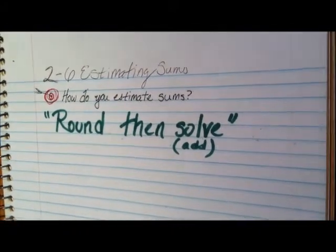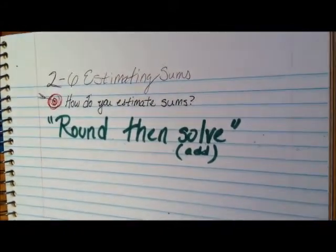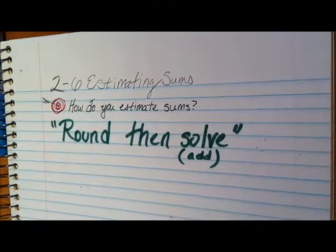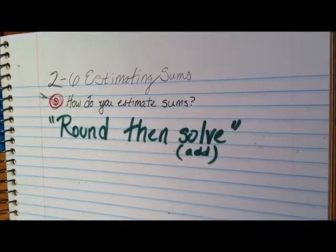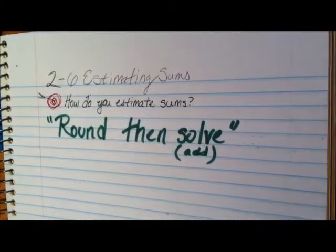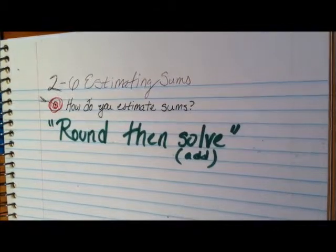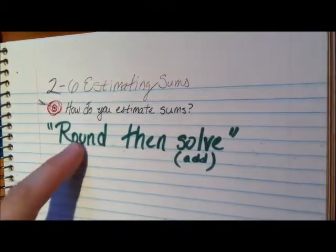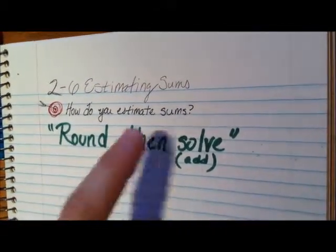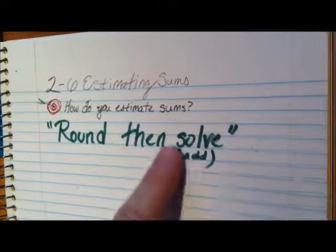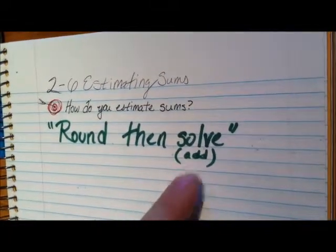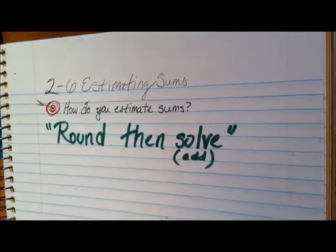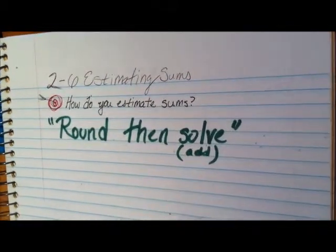In our last video we looked at rounding numbers to the nearest ten and to the nearest hundred. That's basically what we're going to be doing in this lesson, except we're going to be adding the two numbers together after you get done rounding them. So our little mantra we're going to use is round, then solve — it could be add, subtract, or multiply, but in this case it's just going to be addition.